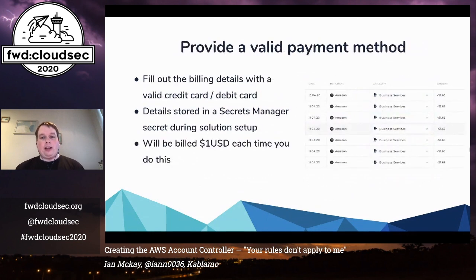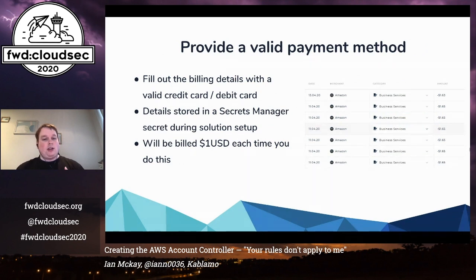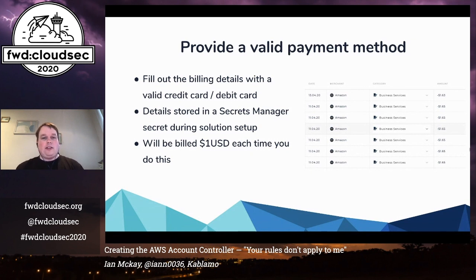We also have to provide a valid payment method. We fill out the billing details with a valid credit card or debit card. In my case, I use a reloadable debit card to keep track of my cloud spend. The details for your credit card are stored in Secrets Manager during the solution setup, so you don't need to expose those details. Something to note: you will get billed one US dollar — roughly $1.65 Australian — each time you do this verification step. But it's just an authorization charge; it will go away after seven days.